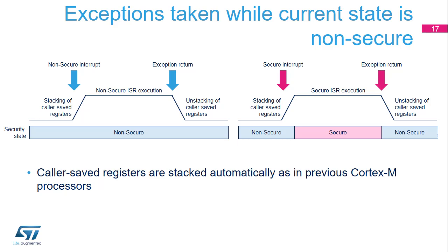When an interrupt is taken while the current security state is non-secure and the interrupt source is secure, the caller-saved registers are pushed and popped to and from the non-secure stack.